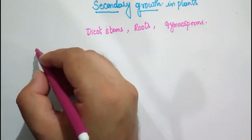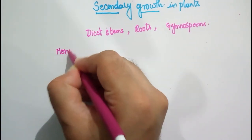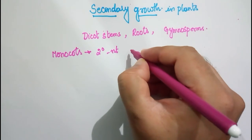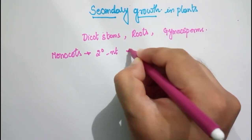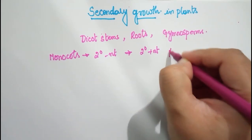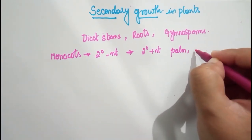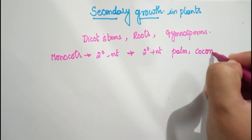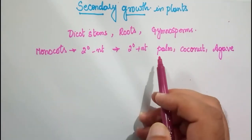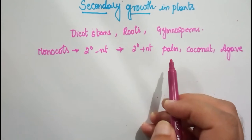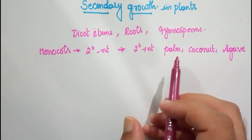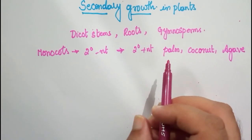In the case of monocots, secondary growth is absent. But exceptionally, secondary growth does take place in some plants even though they are monocots — like palm trees, coconut trees (Cocos nucifera), and agave.